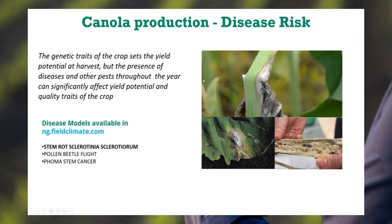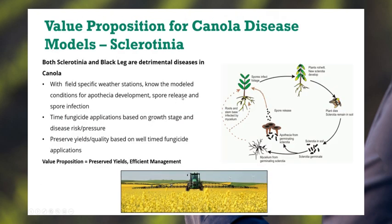When we look at canola production in FieldClimate, we're looking at three separate models: the sclerotinia stem rot, pollen beetle flight, and phoma stem cancer. It's the genetic traits that set the yield potential, but it's these diseases and pests that cause yield reduction through the year, and we want to mitigate them.